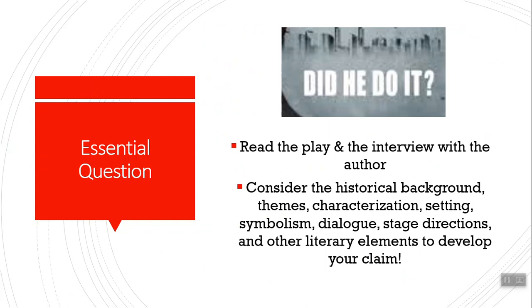So the essential question: did he do it? What I'd like you to do is read the play and then the interview with the author. Think about the historical background and some of the literary elements I've been talking about. When you're doing your writing on this play, I want you to develop a clear claim — yes, he did it, or no, he did not do it. I know the play is not clear about whether or not he did it, but I don't want you to take a middle point of view. I want a very straightforward point of view, and then why — support your claim with short quotations from the play as evidence. I really look forward to reading your papers and I hope you stick with the class and come back to hear all about Pygmalion. Thanks.